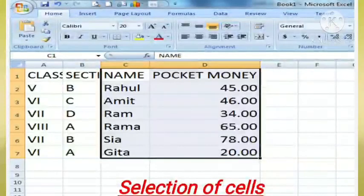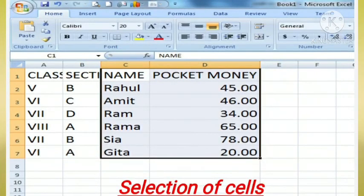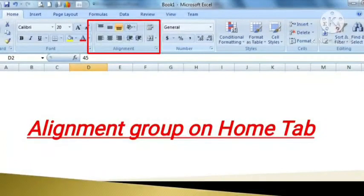Here, in this image, you can see the selection of the cells for alignment. In this image, children, you can see alignment group on the home tab, which is shown with the red color rectangular box on the menu bar.